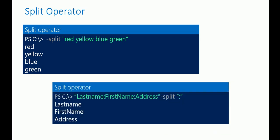Let's take an example of the split operator. Using '-split' with the input value 'red yellow blue green' inside double quotes, it will split the string and output each word on a new line: red, yellow, blue, and green.